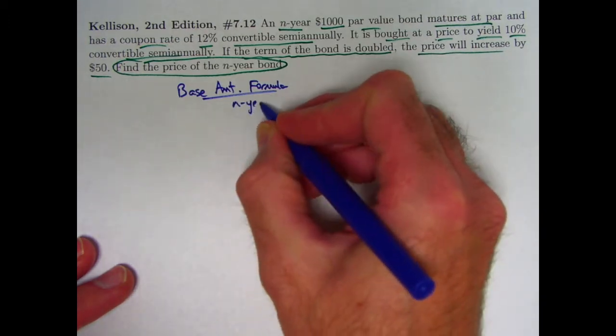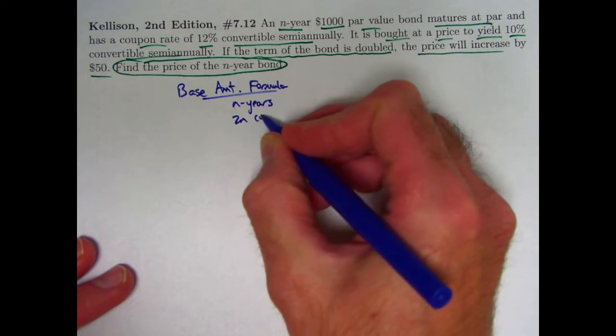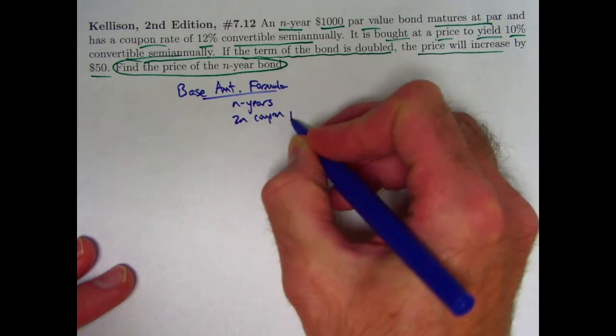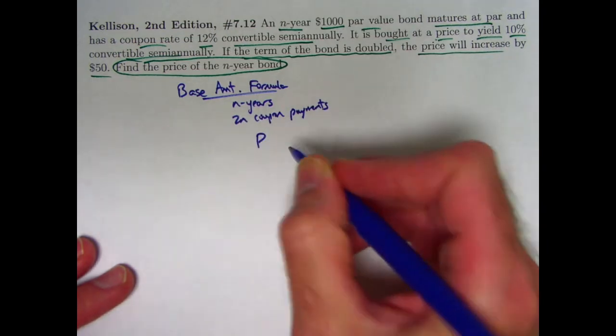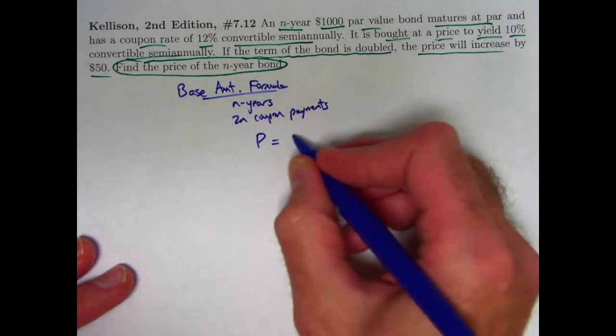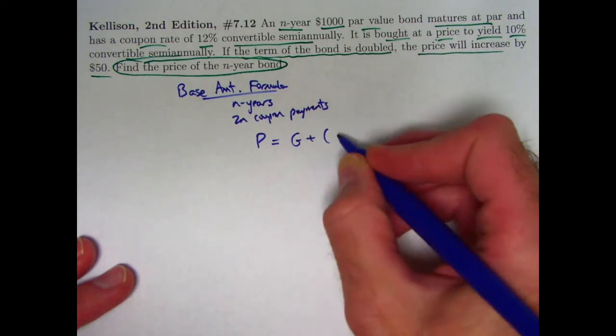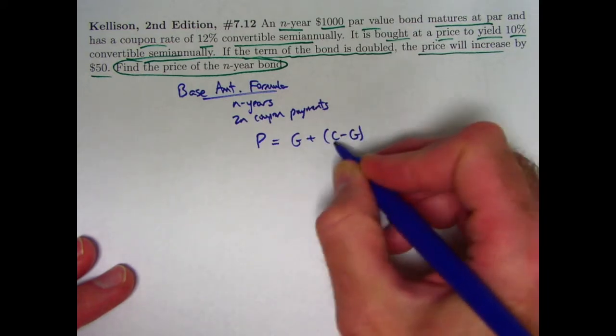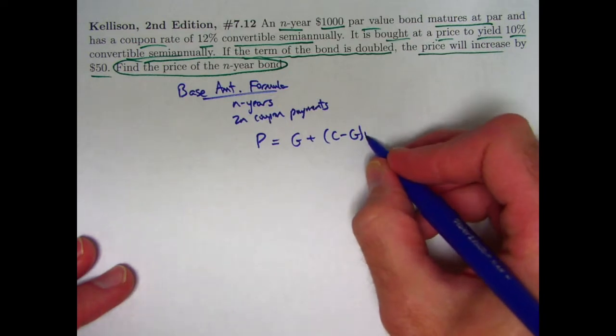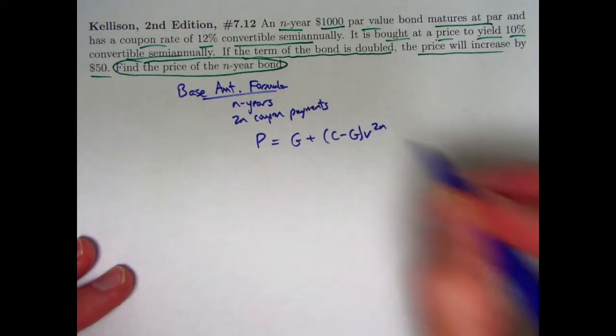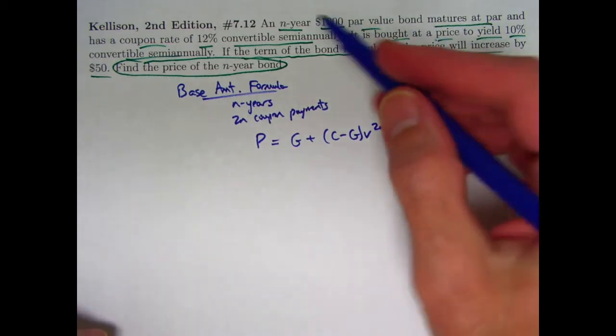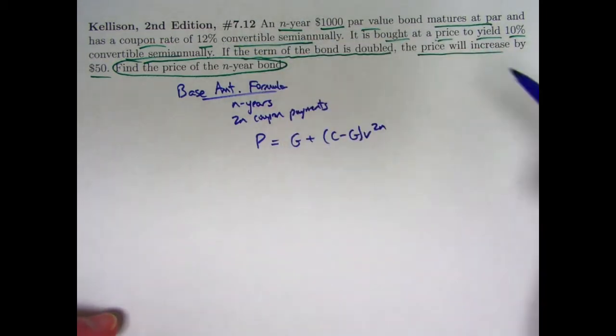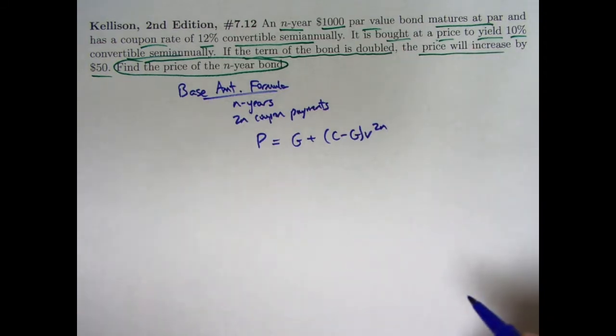For n years, meaning 2n coupon payments, 2n half years, we could write the base amount formula as the price would be G, the base amount, plus the product of C minus G, where C is the redemption value, times v to the 2n here, because 2n is going to be the number of coupon payments, the number of half years. The coupon rate is 6% per half year and the yield is going to be 5% per half year.